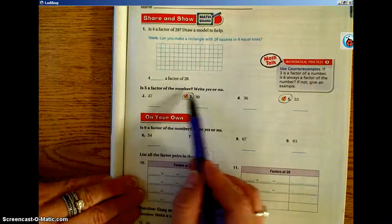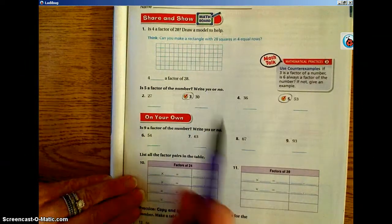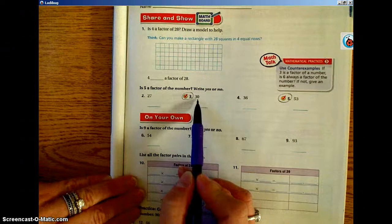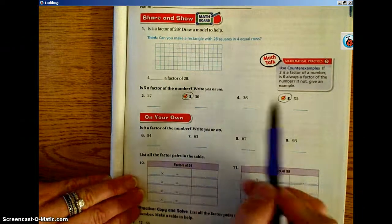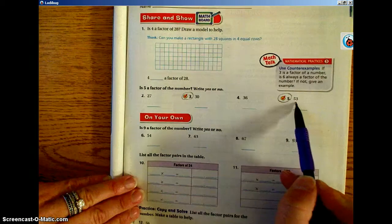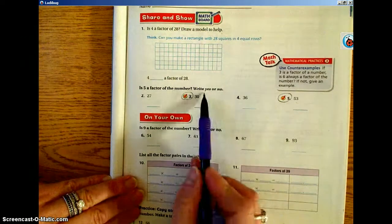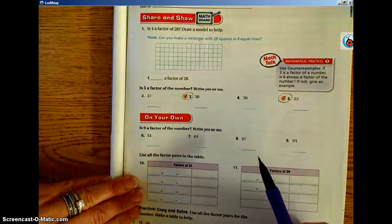Then, is 5 a factor of the number? Write yes or no. Use your divisibility rules and determine, is 27 divisible by 5? Is 30 divisible by 5? Is 36 divided by 5? Is 53 divided by 5? And if it's divisible by 5, then yes, it's a factor. If it's not, then the answer is going to be no.